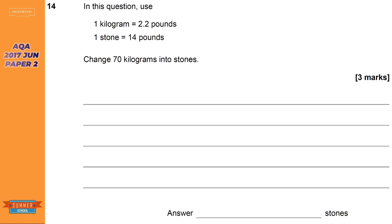So first up is AQA on the calculator paper, and we're asked to convert kilograms, so 70 kilograms, which is this one here, into stones, which is this one here. So we've got to first convert the kilograms into pounds, and then we've got to convert the pounds into stones.